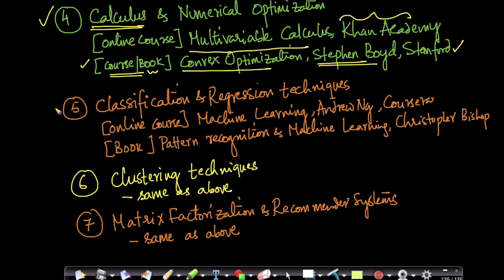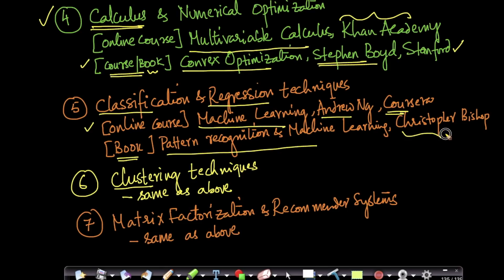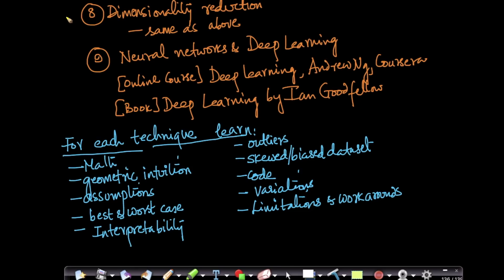After learning these basic concepts, we move on to actual machine learning — classification and regression techniques, clustering techniques, matrix factorization, recommender systems, and dimensionality reduction. For all these topics, there is a very popular online course called Machine Learning by Andrew Ng at Coursera. There is also a popular book called Pattern Recognition and Machine Learning by Christopher Bishop, which is mathematically very rigorous and used in many colleges and universities.